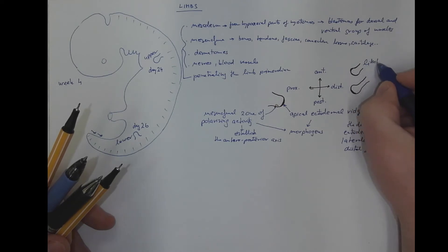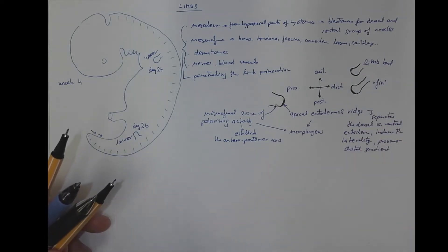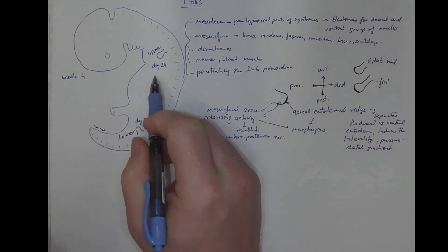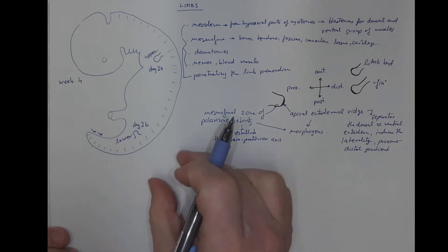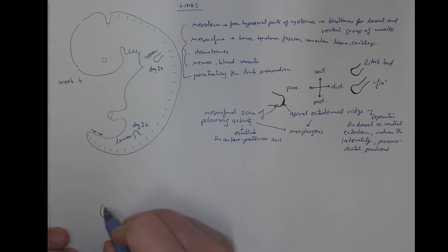This is the limb bud, this is the fin stage. Both upper and lower limb is divided into some parts. The most distal ones being the autopodium, then there is a part called zugopodium and stylopodium. The autopodium of the upper limb contains the phalanges, the metacarpals, metacarpal bones one, two, three, four, five.